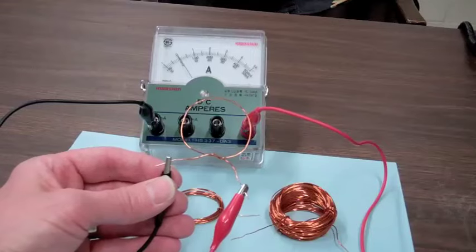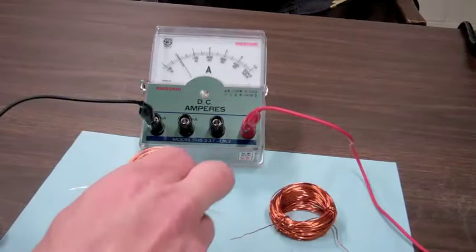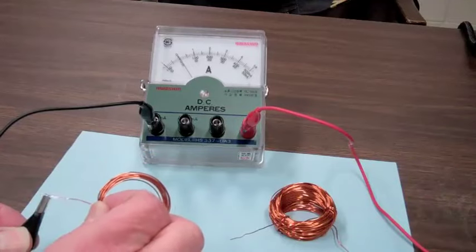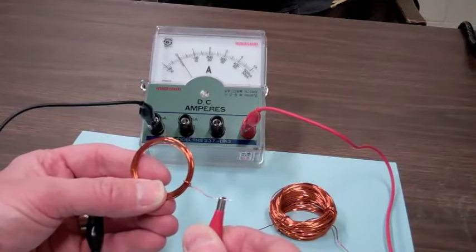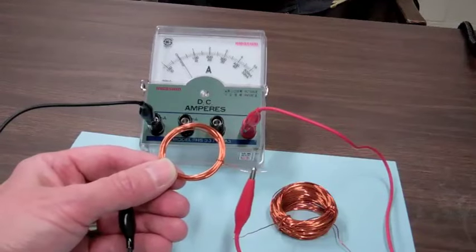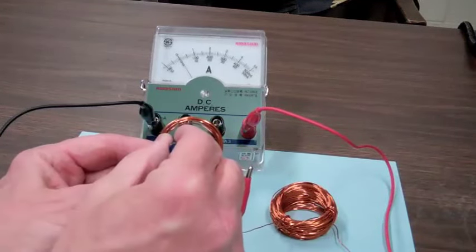Ok, so now let me connect the ten loop coil. And then I am going to do the same thing. I am going to move the bar magnet in and out of the coil. Now you can see more movement of the needle.